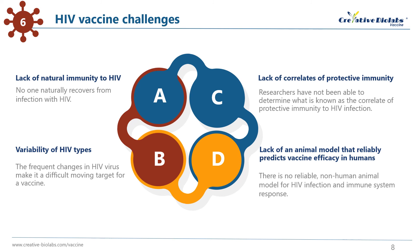A third challenge, related to the first, is that researchers have not been able to determine what is known as the correlates of protective immunity to HIV infection. A correlate of protective immunity is defined as a specific immune response that is closely related to protection against infection, disease, or other defined endpoint. Because no one is known to have been infected with HIV and then naturally cleared the virus, we do not know what protection from HIV would look like in a person. Would it be the production of a certain kind or number of antibodies? Would it be the persistence of a certain kind of memory T-cell? Until researchers have established the correlates of protective immunity to HIV infection, designing and validating a vaccine will be difficult.